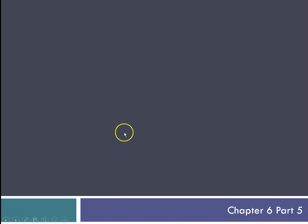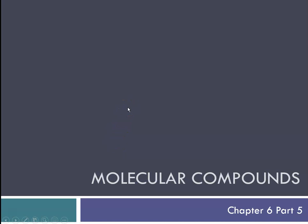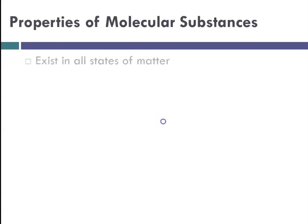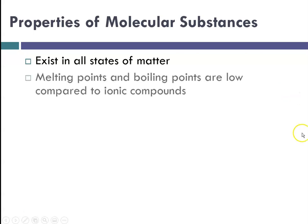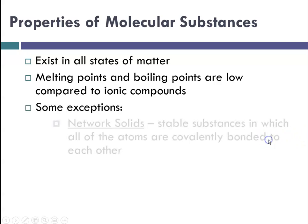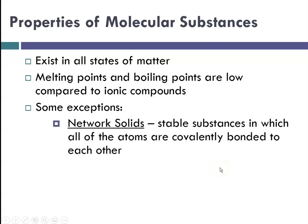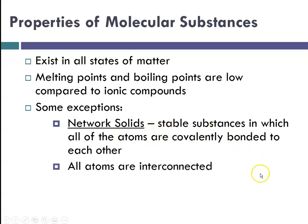Now we're moving to Chapter 6, Part 5, and we're going to talk about properties of molecular compounds. Remember, molecular compounds are defined as compounds that contain covalent bonds. They can exist in all three states of matter, and their melting points and boiling points tend to be low compared to ionic compounds. Some exceptions would be network solids — stable substances in which all atoms are covalently bonded to one another — which have much higher melting and boiling points. In network solids, everything is interconnected.